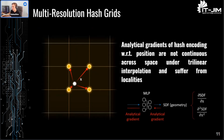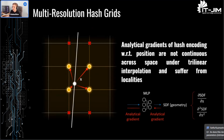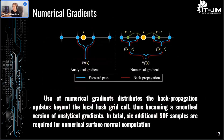A problem with directly applying multi-resolution hash grids with SDF representation is that analytical gradients of hash encodings with respect to position are not continuous across space under trilinear interpolation and suffer from locality — meaning that for a given point x, only the local grid cell is updated during backpropagation. For continuous flat surfaces like walls, all of those grid cells should produce smooth surfaces without sudden transitions, and joint optimization of these grid cells is desirable. However, with analytical gradients, unless all corresponding points at the grid cells are sampled and optimized simultaneously, such consistency is not guaranteed. So the authors propose using numerical gradients to overcome the locality of analytical gradients.